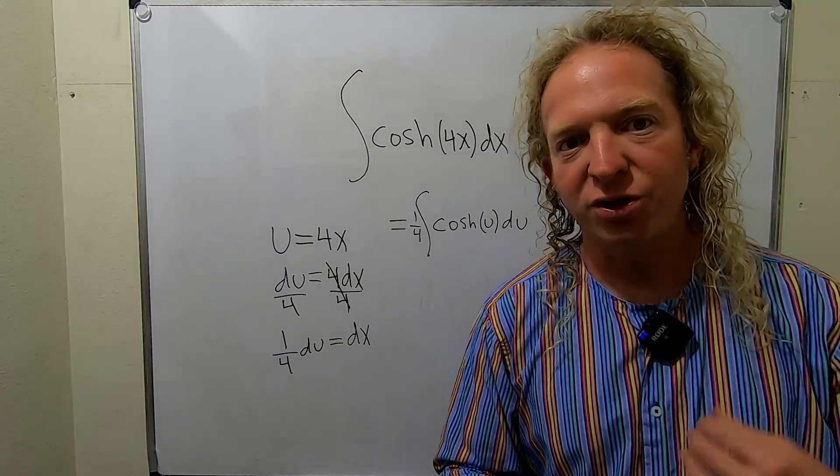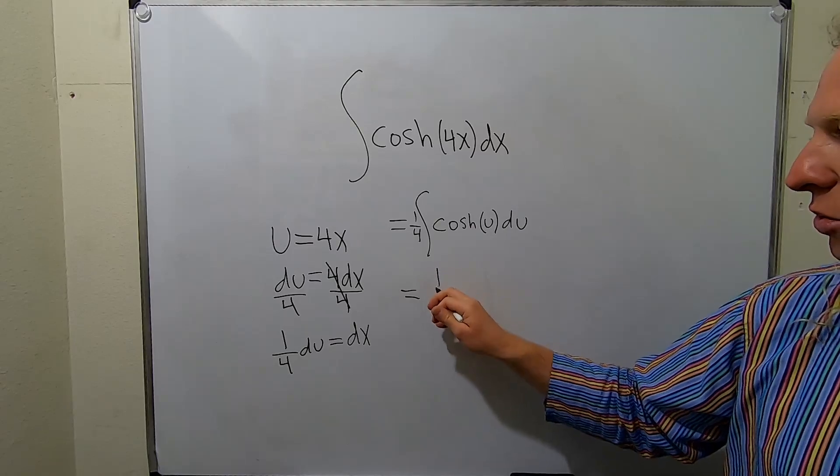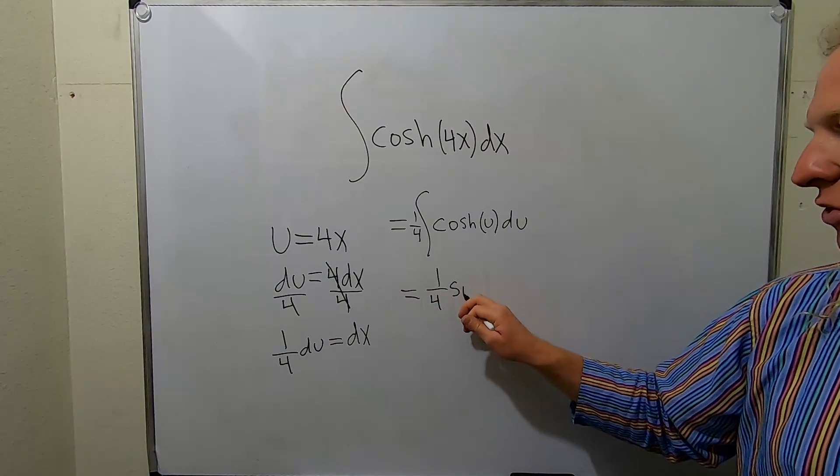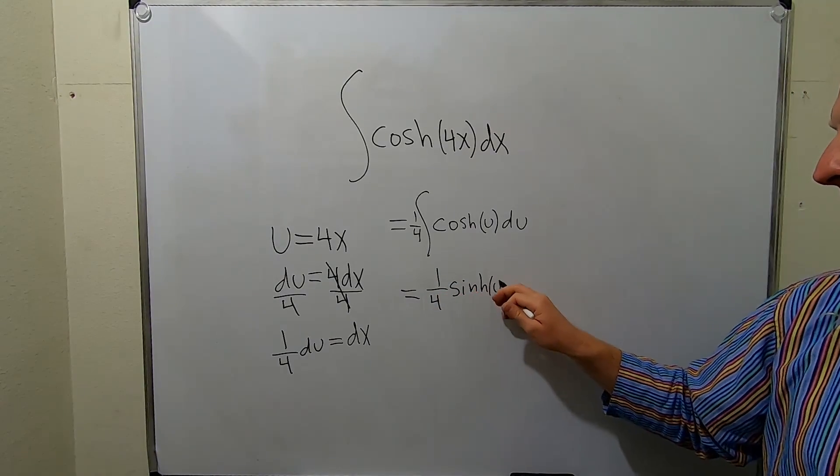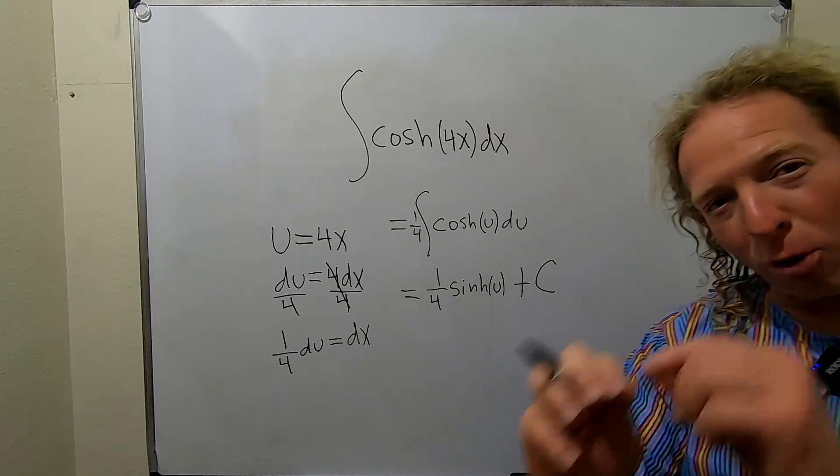When we integrate cosh, we get sinh. So we drop the integral sign, we drop the du. So we get 1/4 sinh of u. Don't forget your constant plus c. And we're almost done.